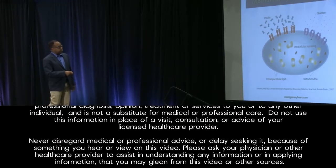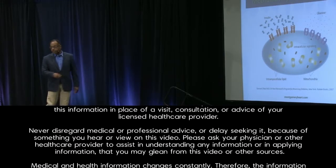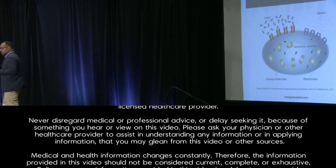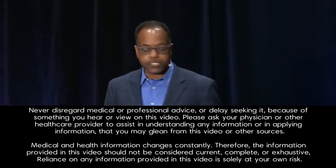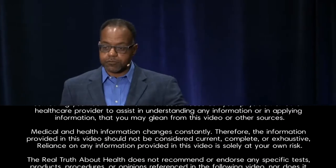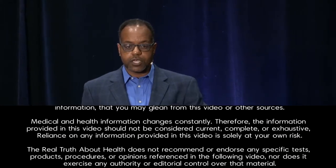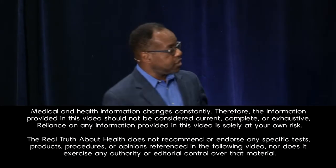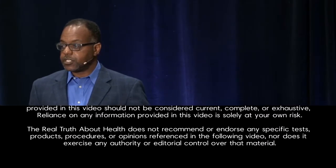Early on in this phase, the pancreas just secretes more insulin. So if the insulin receptors are not working as well, maybe you can compensate by producing more insulin. As a result of that, you can overcome it, so your blood sugar may stay normal. Many patients will have their labs drawn and we'll measure insulin levels and see an increase in insulin levels, even though the blood sugar is normal.